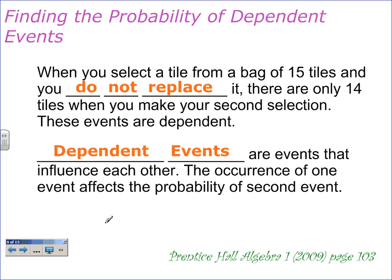When you select a tile from a bag of 15 tiles and do not replace it, there are only 14 tiles when you make your second selection. These events are dependent. Key words here: do not replace, or without replacement. Dependent events are events that influence each other. The occurrence of one event affects the probability of the second event. We're going to see a change in definitely the denominator in the second probability, and sometimes the numerator.